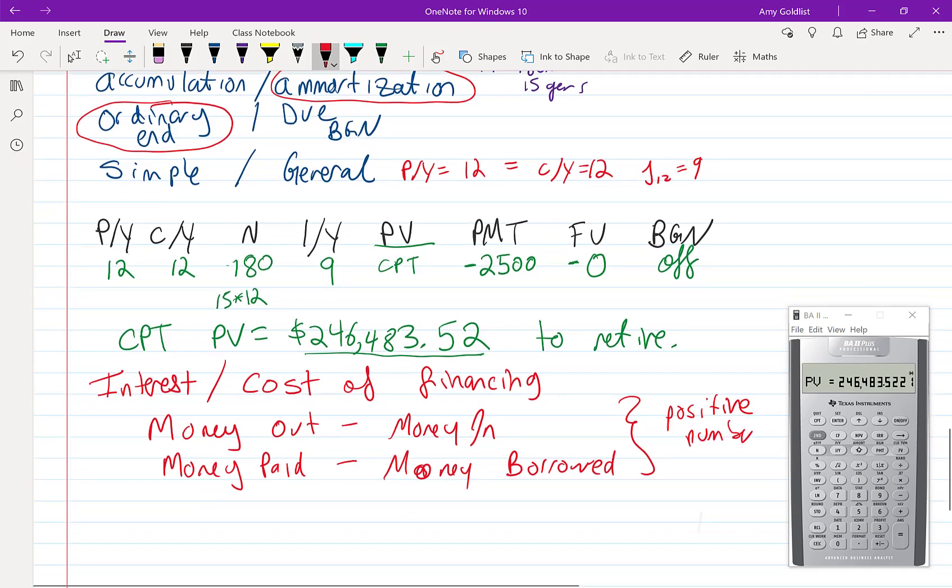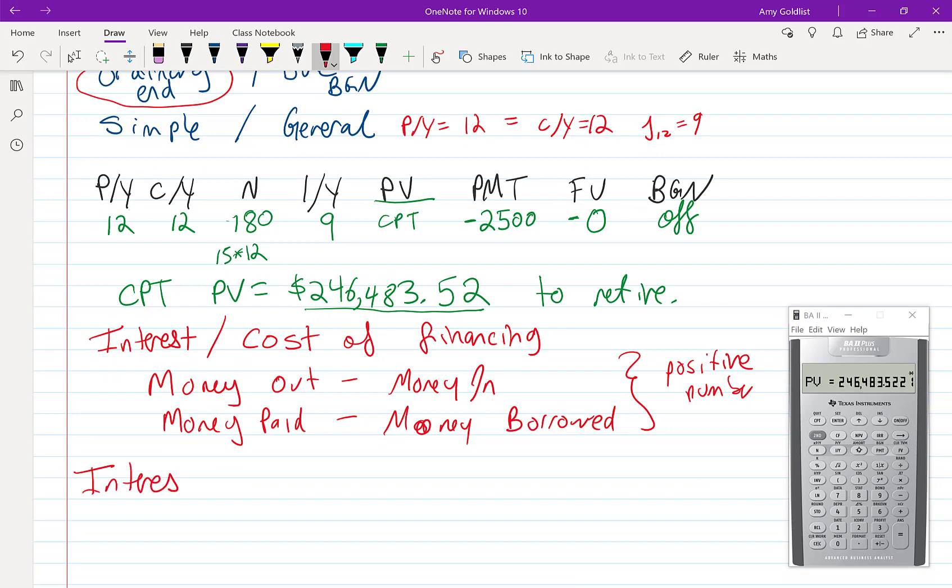So in this case, let's look at this question. Our interest payment is going to be, well I took out 180 payments of $2,500 and we deposited $246,483.52. So if I do this, I go 180 times $2,500 minus $246,483.52 equals $203,000. So we actually made quite a lot of interest and that's because we had a fairly good interest rate of 9% but also this was invested for 15 years. That's a long time for money to compound.